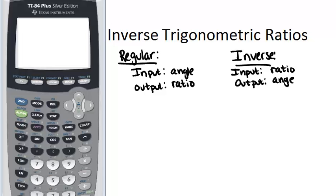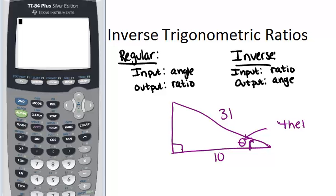So, let's look at an example. If we had a right triangle, and we knew two of the sides were 10 and 31, and we were trying to figure out this angle right here, we'll call that theta. That little symbol, by the way, is theta. It's a variable, like x, that is often used for missing angles.